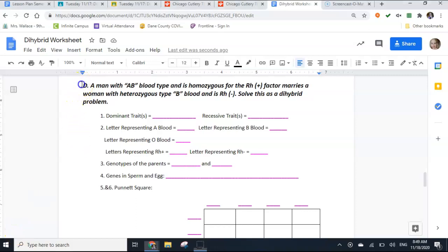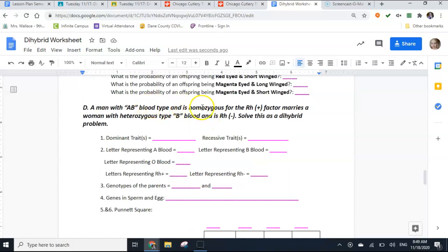All right, we are going to set up this problem here. It says a man with AB blood is homozygous for Rh positive marries a woman with heterozygous B blood, Rh negative. We already know from our blood type problems...